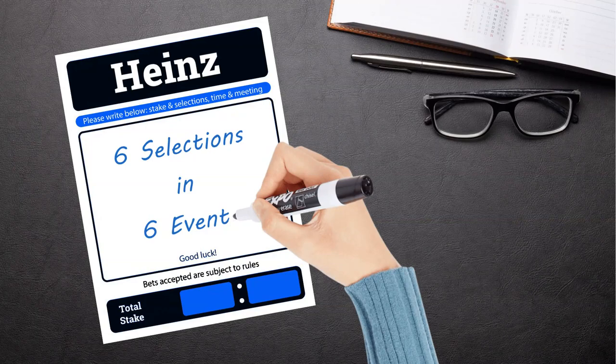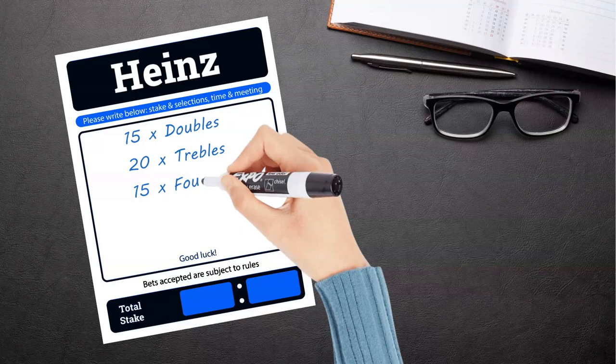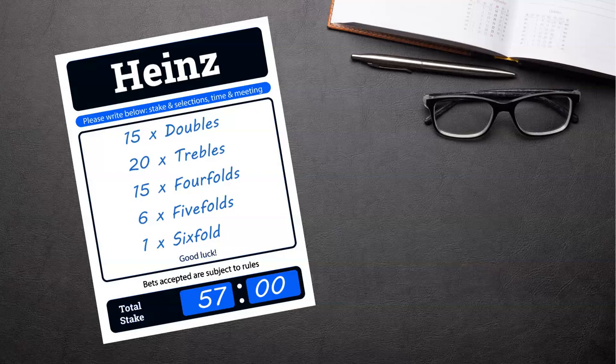It consists of 15 doubles, 20 trebles, 15 fourfolds, six fivefolds and a sixfold accumulator, making 57 bets in total.